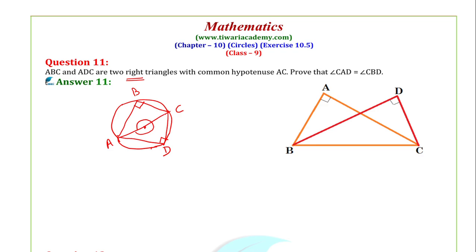So AC hypotenuse pe, we have this side ADC equal to 90 degree, and this side ABC equal to 90 degree. So this construction is done. ABC and ADC are two right angles — right angle ADC with common hypotenuse AC. So these two angles ABC and ADC are common. Prove that angle CAD is equal to angle CBD. So this is CBD.